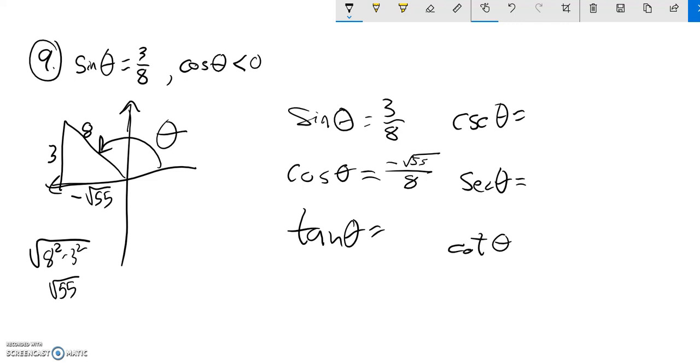Tangent is the slope, rise over run, y over x, so that's 3 over negative root 55. I don't like that root in the denominator, so I'll multiply by root 55 over 55 to get negative 3 root 55 over 55.